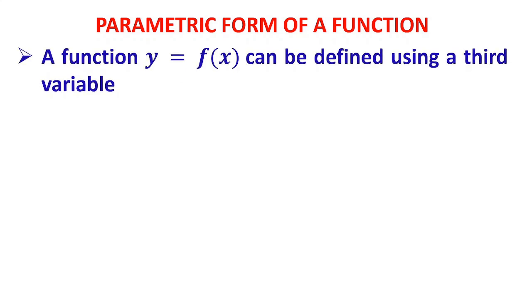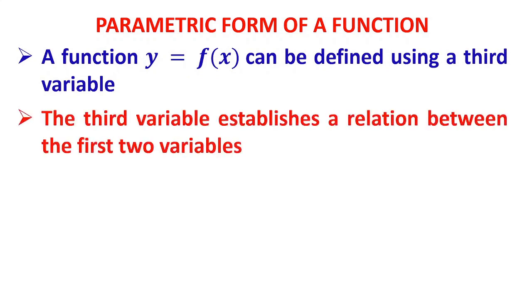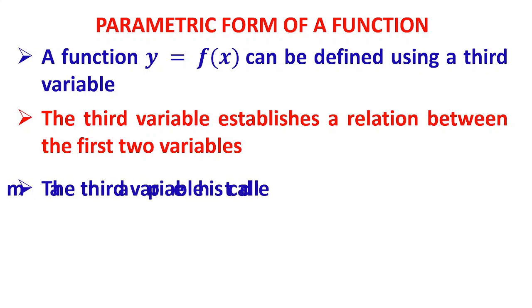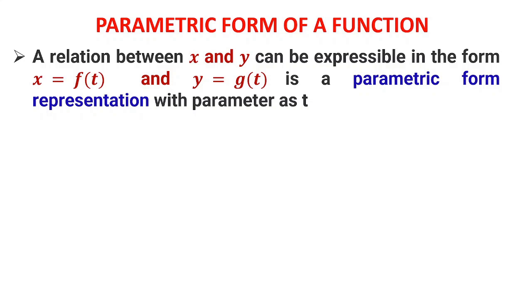Let us see what is meant by the parametric form of an equation. A function y = f(x) can be defined using a third variable. That third variable establishes a relation between the first two and is called the parameter. When y of x is represented through such a third variable, the representation is called the parametric form. For example, a relation between x and y expressible as x = f(t) and y = g(t) is a parametric form representation with parameter t.